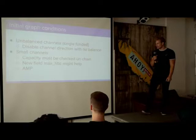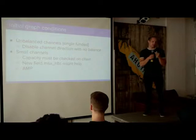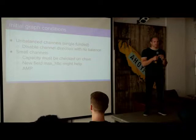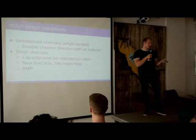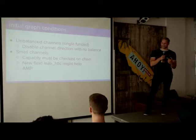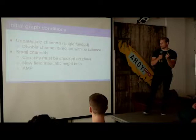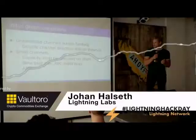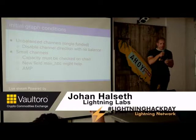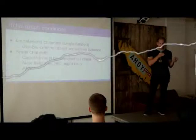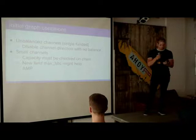We've also seen that people tend to create very small channels, which are not useful for routing very large payments. Initially, channel capacity must be checked on-chain since the initial routing gossip doesn't contain capacity information, meaning some nodes might try to route a payment through your channel that's larger than its actual capacity. A recent addition to the BOLT spec adds a new field, max HTLC, that you can add to your channel update to say you can only route payments up to a certain size. Hopefully, atomic multi-path payments — which let you split a payment into several smaller ones — are also coming, so you can utilize the capacity of smaller channels.